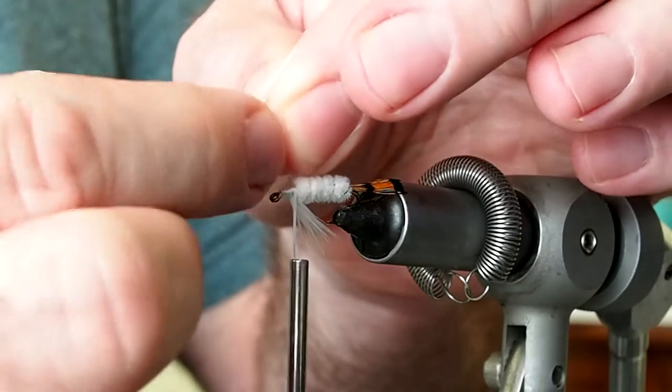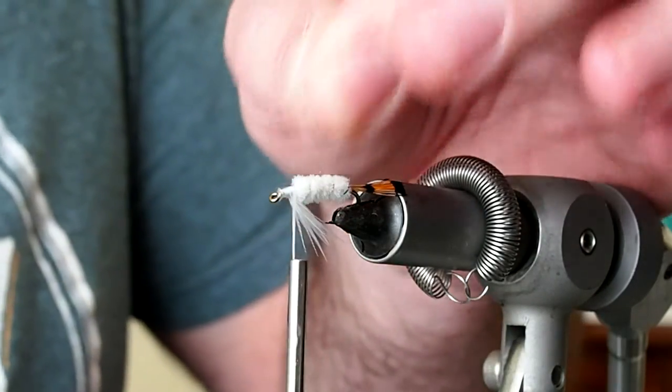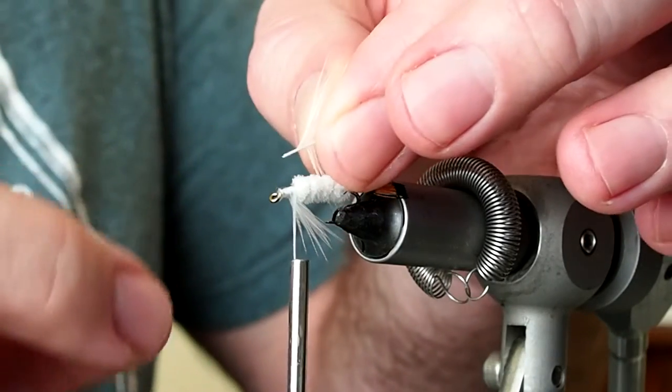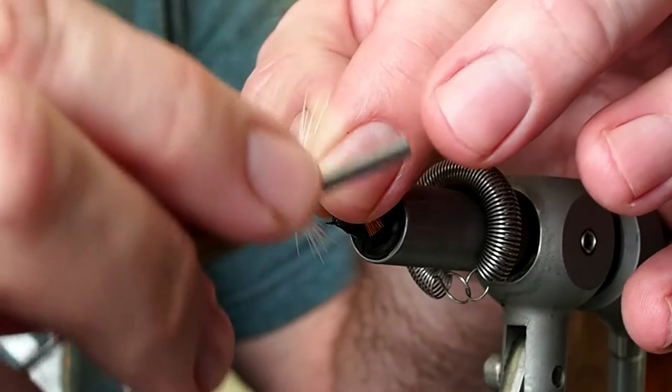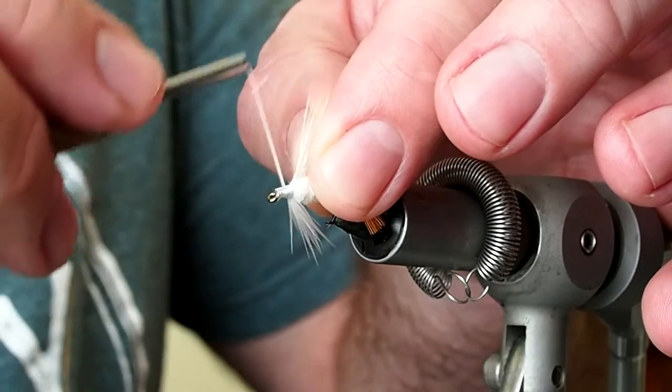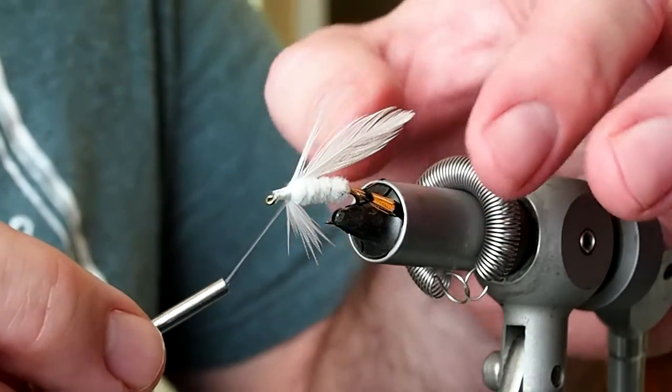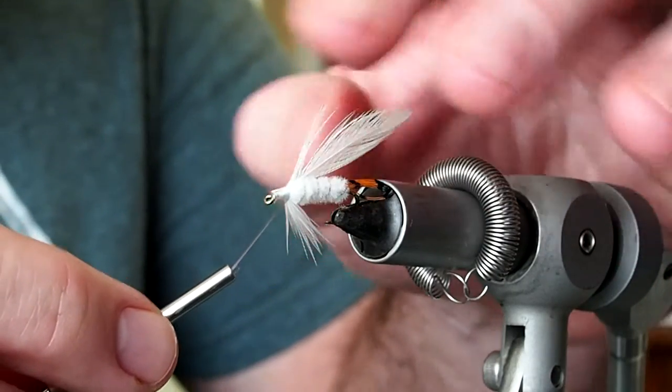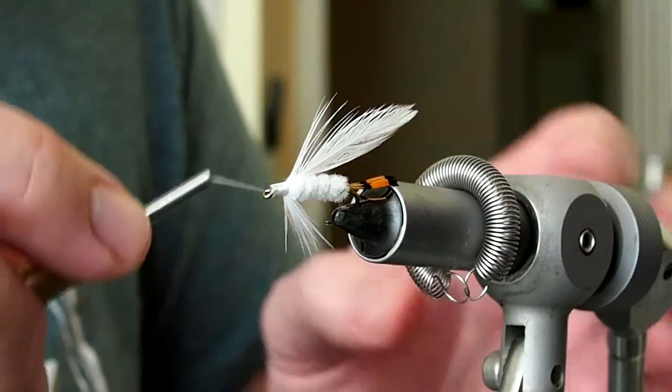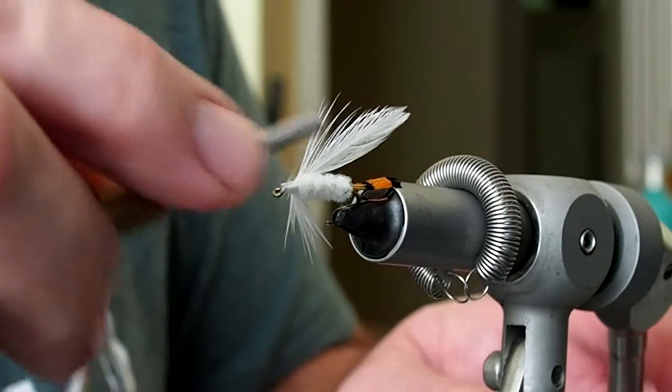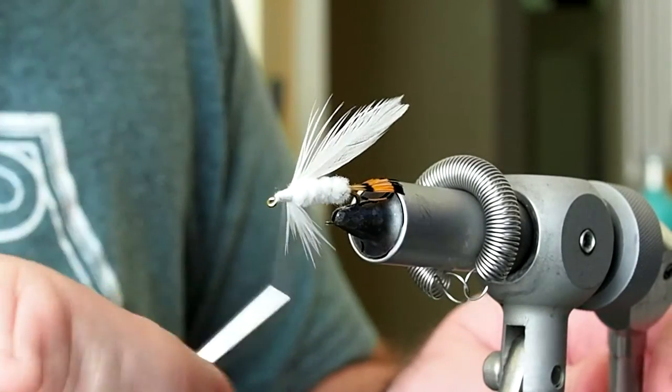I want to strip away the end barbs so you end up with some tips to tie in with. Place those on top of the head, capture them with one or two light wraps, and then check to make sure the feather lays correctly. And then just advance our thread forward and we'll start to build up a head.